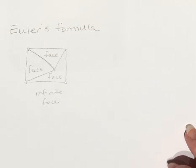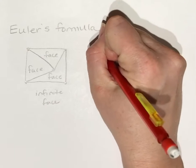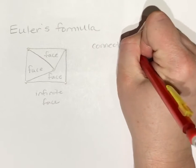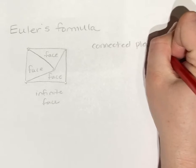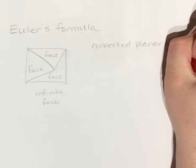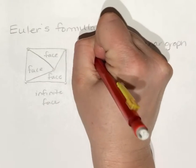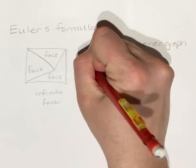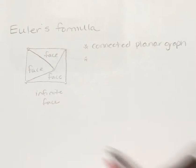So in Euler's formula, you need a couple of things. First of all, you have to have a connected planar graph. So we've got a connected planar graph, and it has to be drawn so that none of the edges intersect.